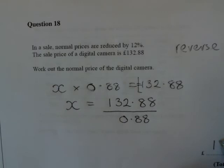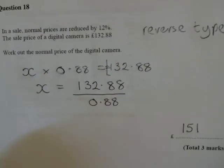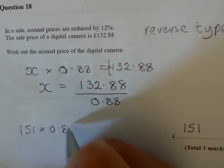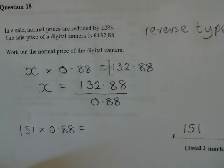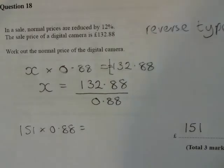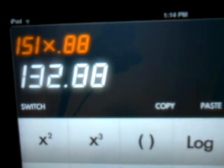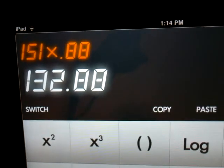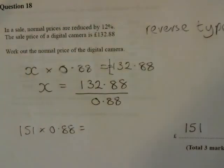So £151. We could check this by doing a quick check — times 0.88 — and it should take us back to the sale price. 151 times 0.88 equals £132.88. So that will be the correct answer.